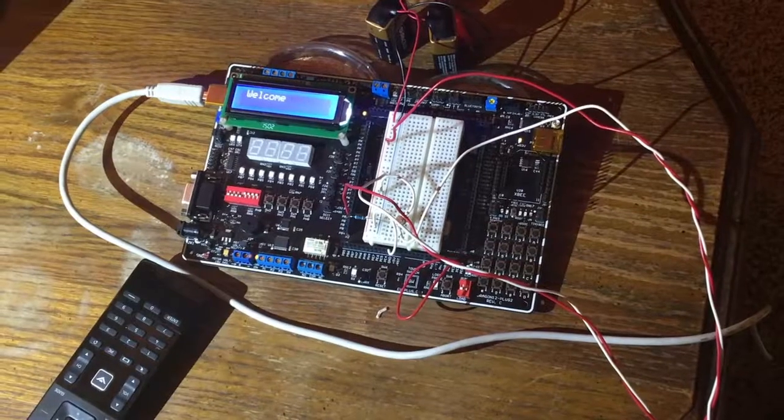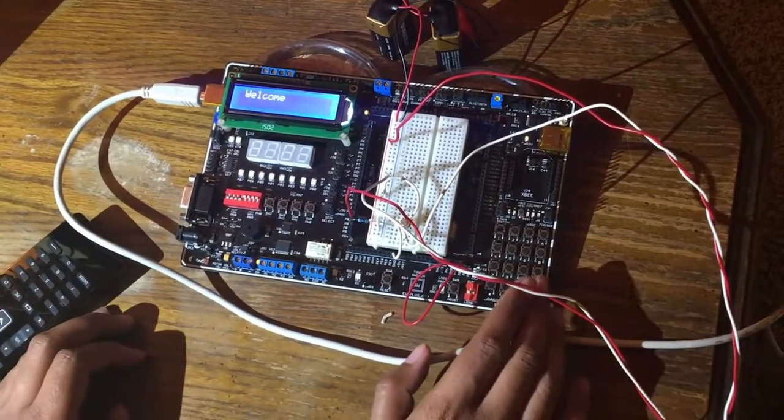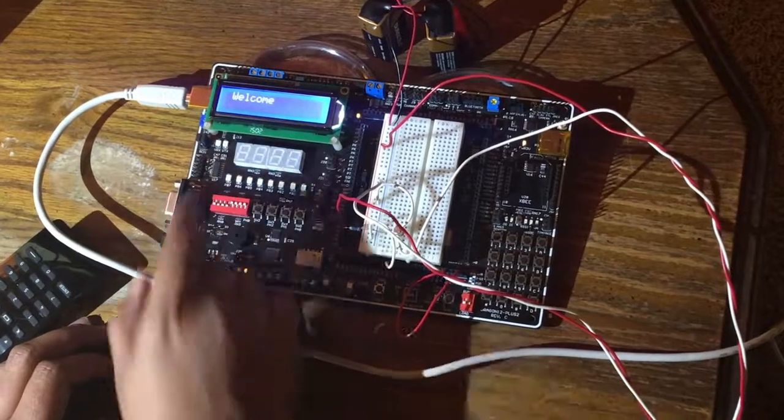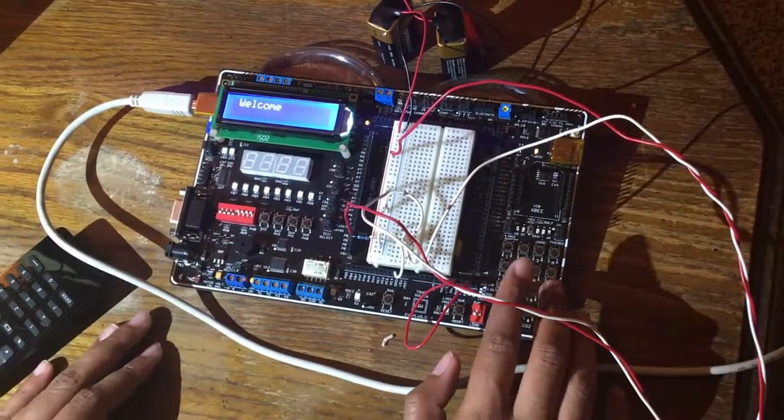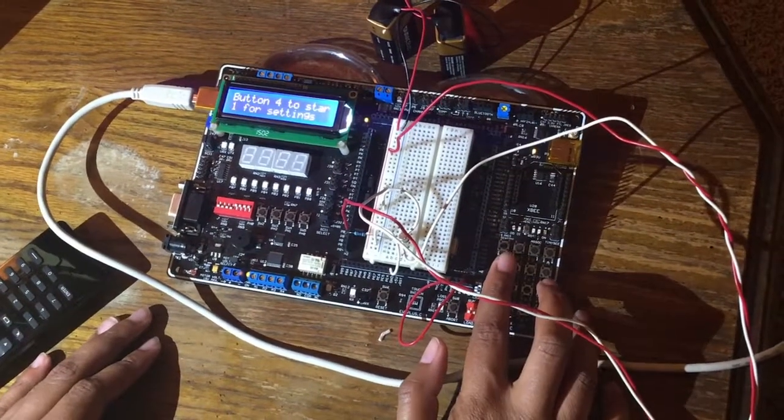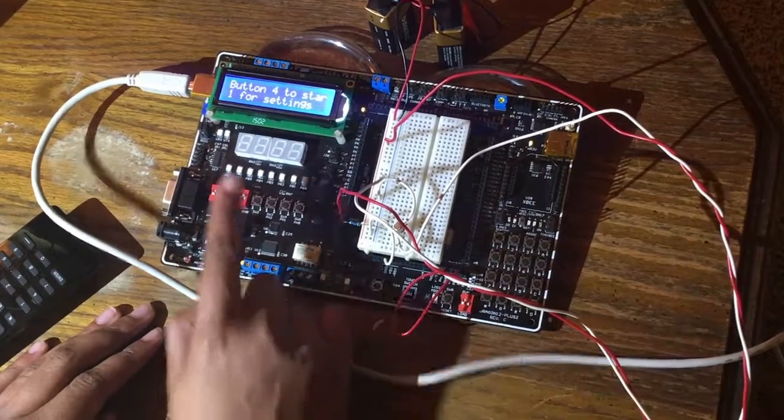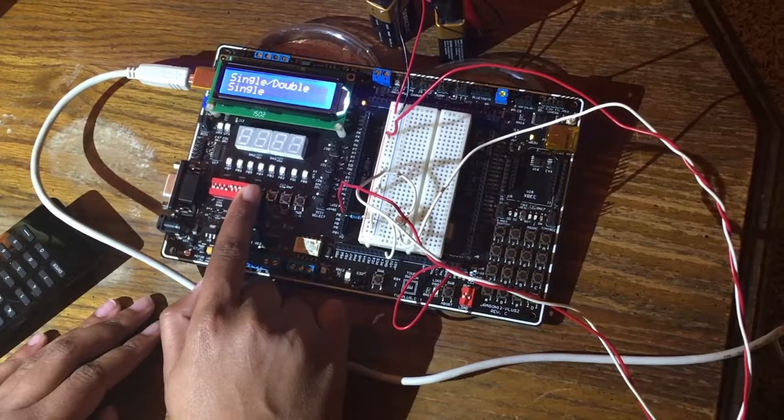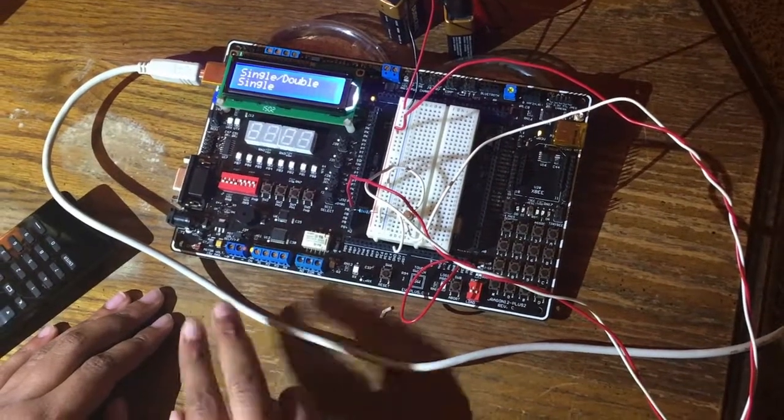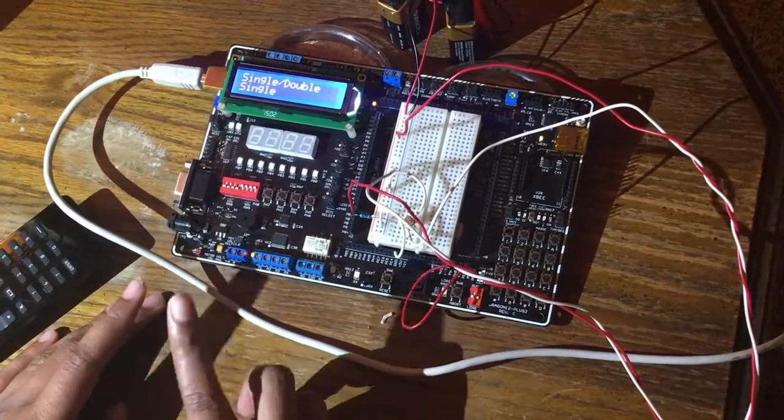Okay, so this is our setting menu. First it displays welcome, then it waits for you to press the button. It says press button for start and press button one for setting. So we're going to press the first button. Now, if you want to do a single drop or a double drop, for this one we're going to do a single drop.